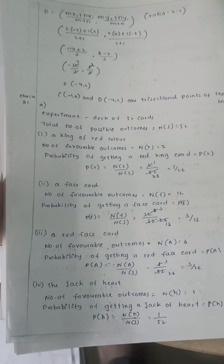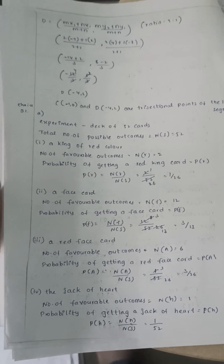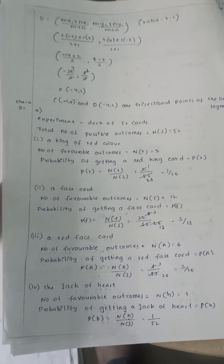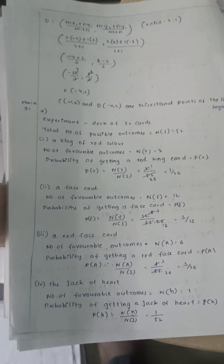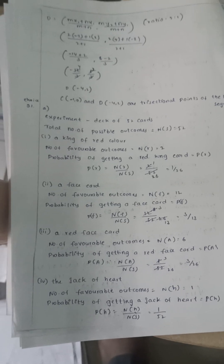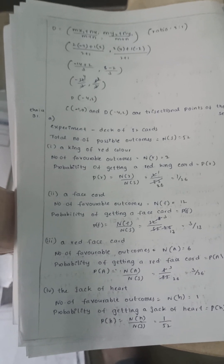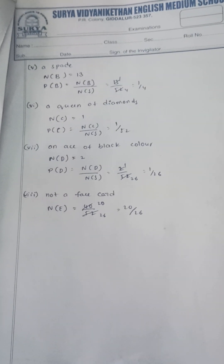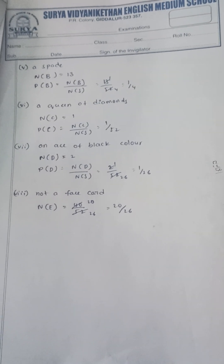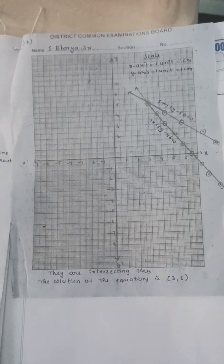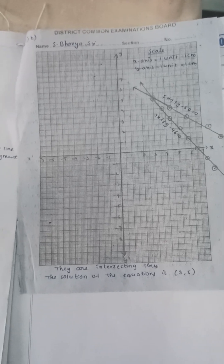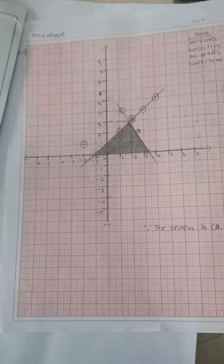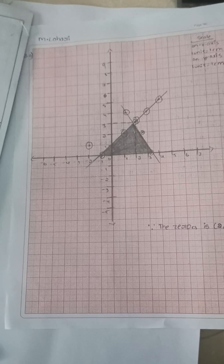Question 31a: from a deck of cards — red color kings: 2, face cards: 12, red face cards: 6, jack of hearts: 1. Question 33b and 33a involve graph-based problems.